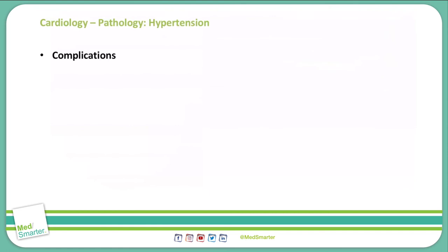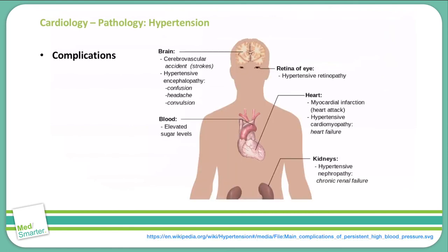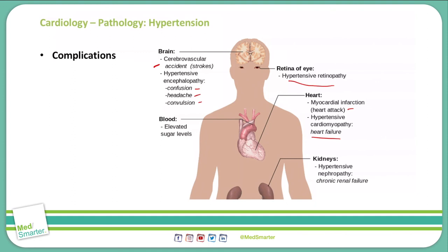There are many complications associated with hypertension, many of which are listed in this diagram. Starting with the brain, we can have an increased incidence of stroke, as well as hypertensive encephalopathy with confusion, headache, and convulsions. In the eyes, we can see hypertensive retinopathy visible on fundoscopic examination. With the heart, there is a risk of heart attack, left ventricular failure, hypertensive cardiomyopathy, atrial fibrillation, aortic dissection, and aortic aneurysms. Related to the kidneys, we can see hypertensive nephropathy leading to chronic renal failure.